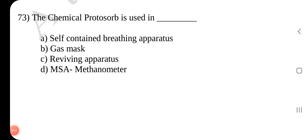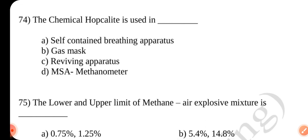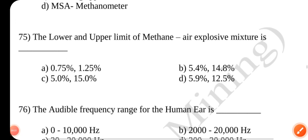Question number 74. The chemical hop colite is used in dash. Answer is B gas mask.